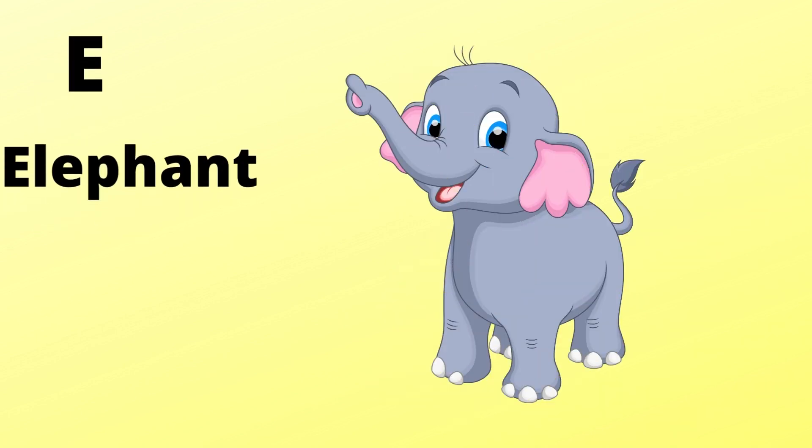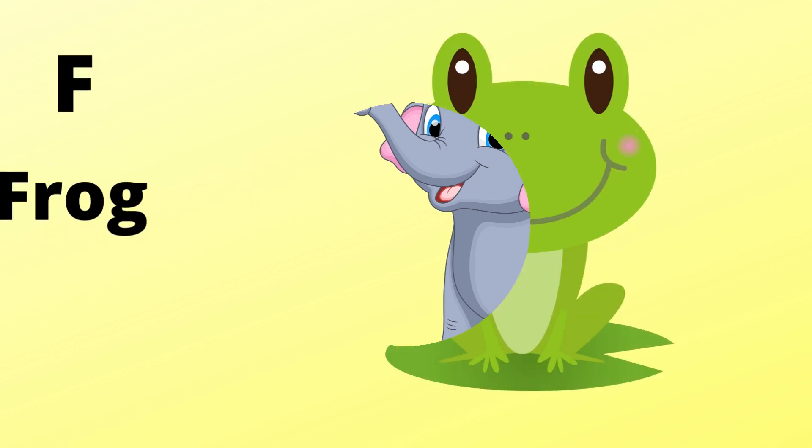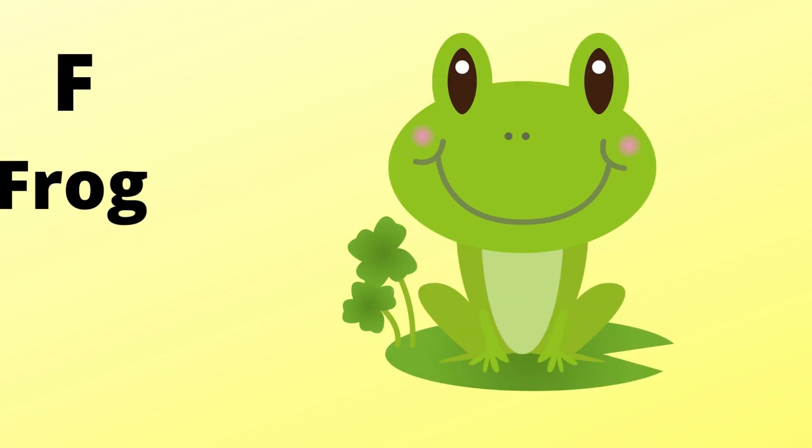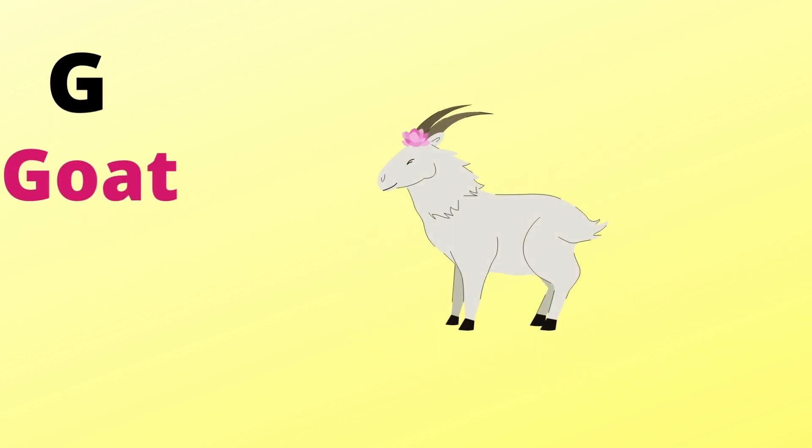E is for elephant, e-e-elephant. F is for frog, f-f-frog. G is for goat, g-g-goat. H is for hand, h-h-hand.